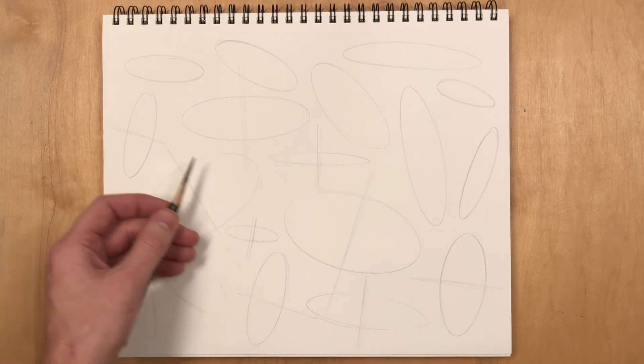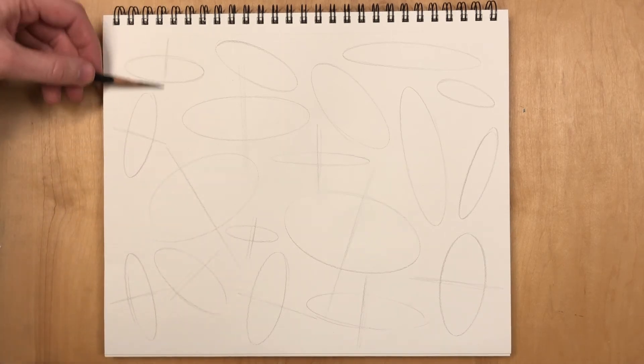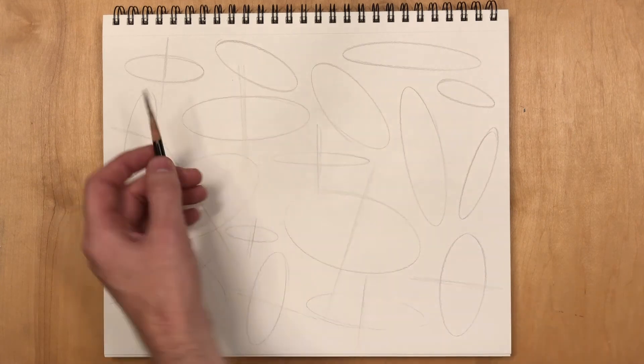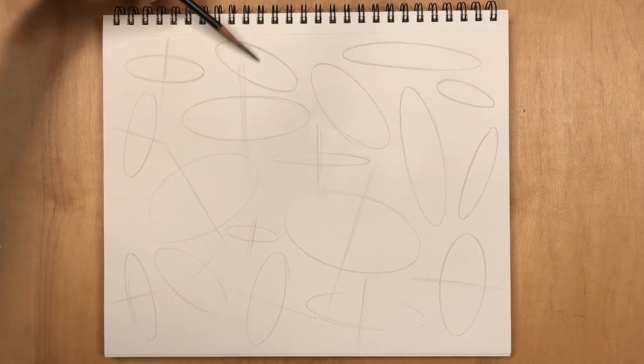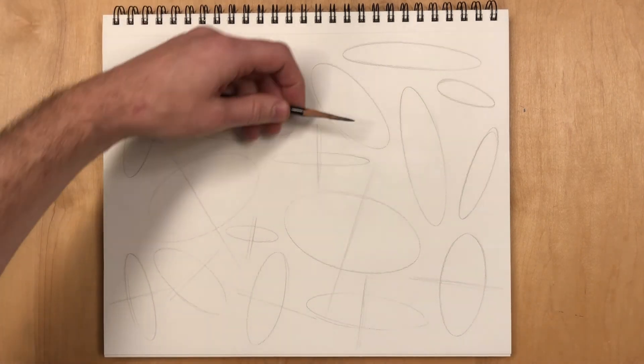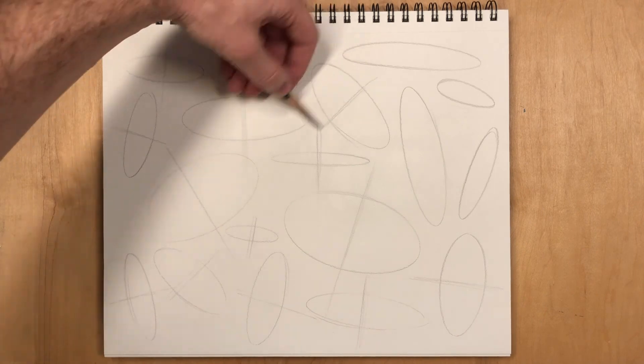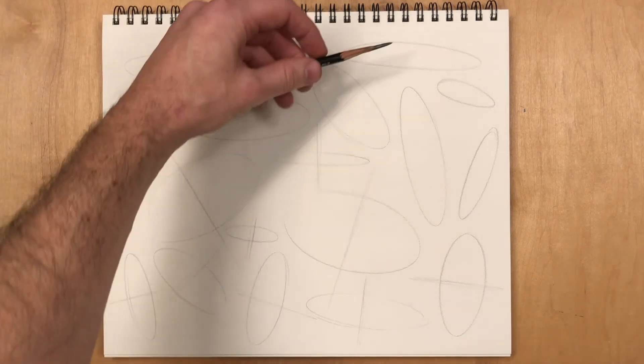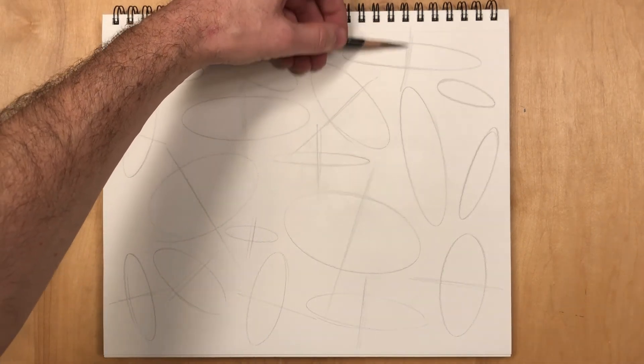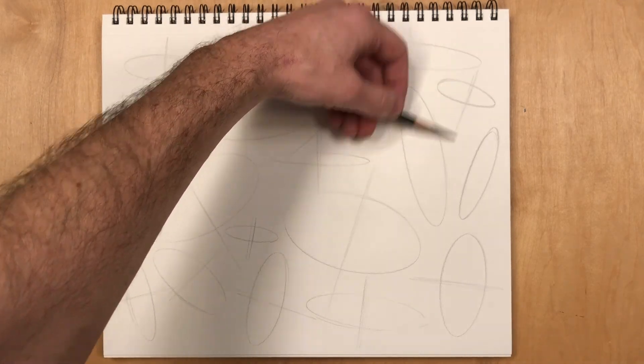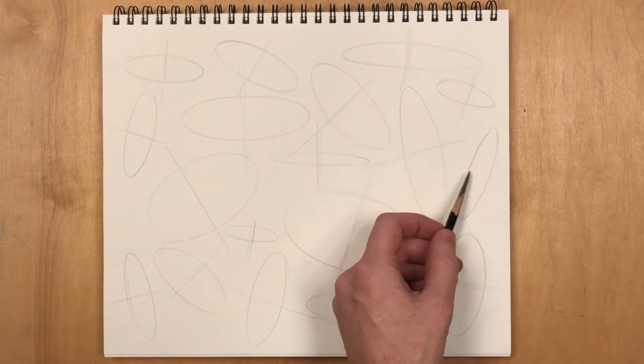You'll notice there's a variety of ellipses here. They're at different angles. Some of them are thin ellipses. Some of them are wide ellipses. You want to try to shoot for a variety because you don't want to get used to only drawing the same kind of ellipse always. You want to be able to draw the type of ellipse that the drawing needs. So you need to be able to draw a variety of ellipses.